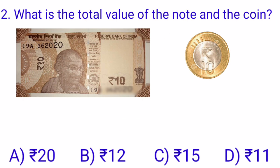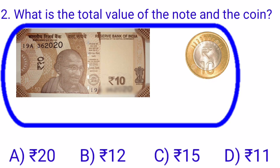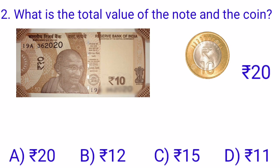What is the total value of the given note and the coin? Here we have to find out the total value of these two things. It is a 10 rupee note, and along with this note we have a 10 rupee coin. So the total value of a note and a coin is 10 plus 10, that is equal to 20 rupees. Option A is 20, option B is 12, option C is 15, and option D is 11. So option A, 20 rupees, is the right option and we will put a tick mark at option A.